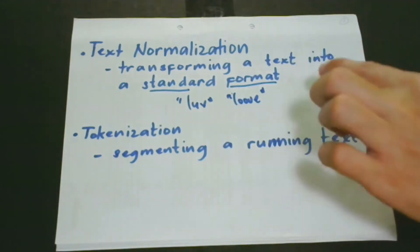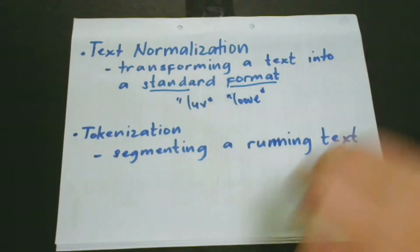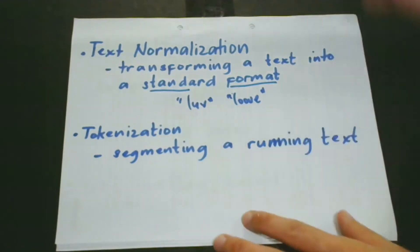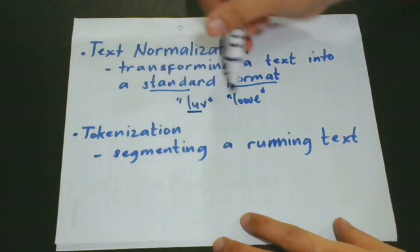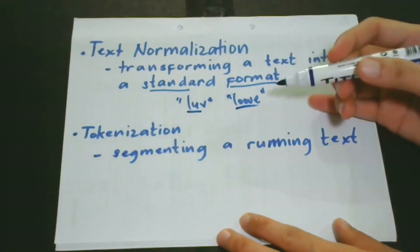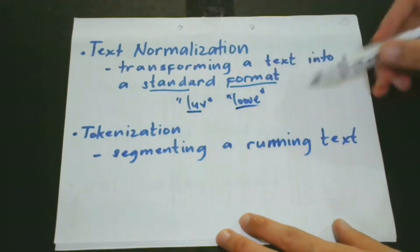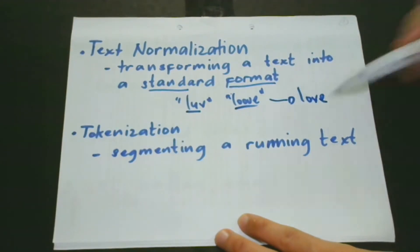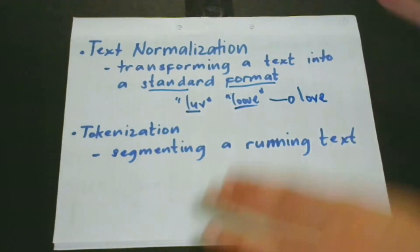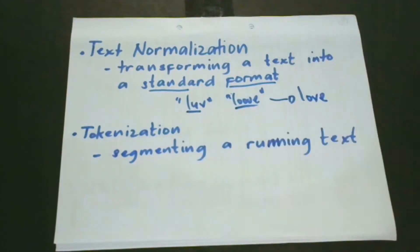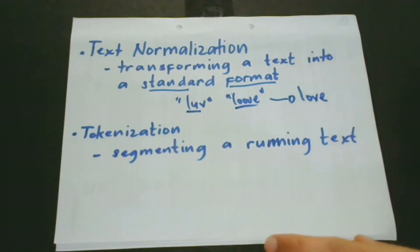Sometimes it's written as L-O-V-V-V-V-V-V-V-V-E-E-E. When we normalize these two words, we get 'love' in both cases. We transform them into their standard form — the real spelling, 'love.' That's how we do normalization.